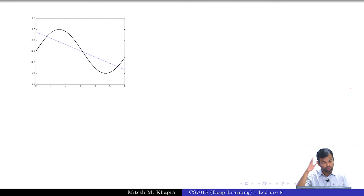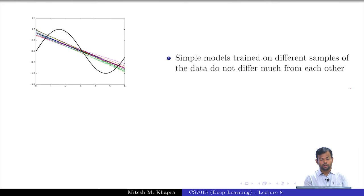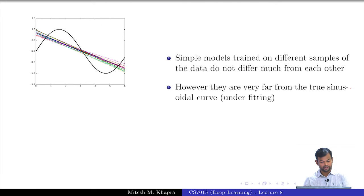This black curve that you see is the true sinusoidal curve from which the data has come. The blue line is one of these functions which I have trained from one random sample of the data. I train different functions from different random samples and get different lines. Every time I am basically learning a different value of w1 and w0. I have done this 25 times and plotted these lines. What do you observe? If you compare any line to any other line, they are very close to each other. However, there is a problem. They are very far from the actual function. That means we are under fitting. We have very few parameters, only 2, that is why we are under fitting.